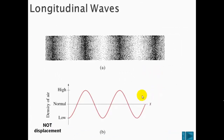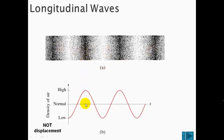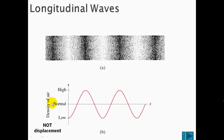Here we can express graphically how the density varies as the wave passes through the medium. The compression is the area of maximum density. Rarefaction is an area of lowest density. Note that this is a graph of density against distance, not displacement against distance.